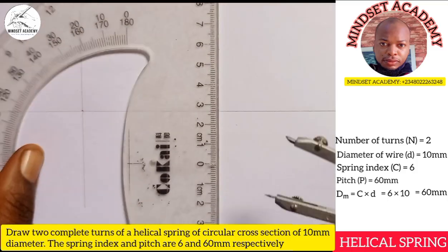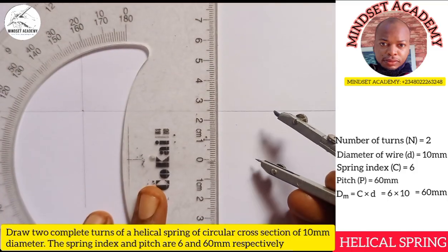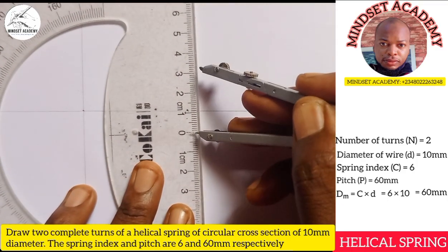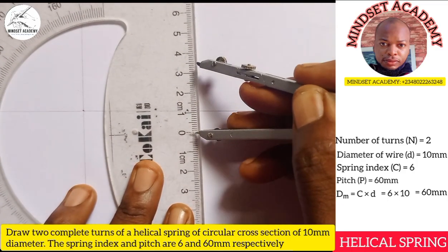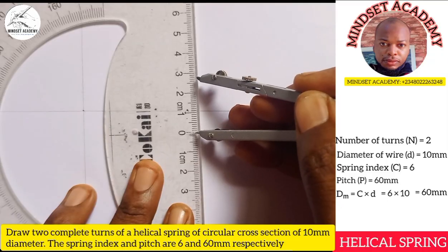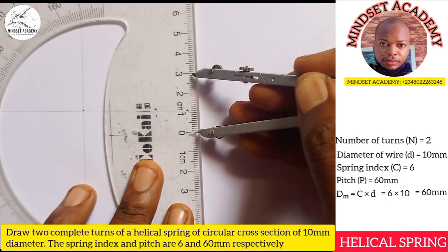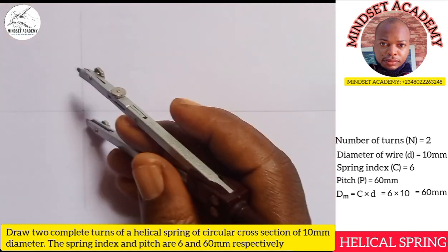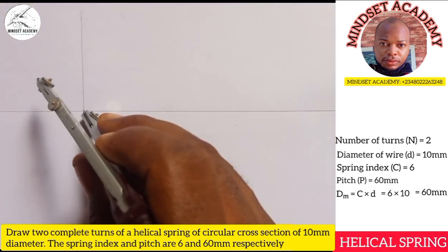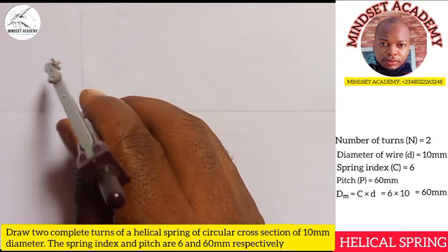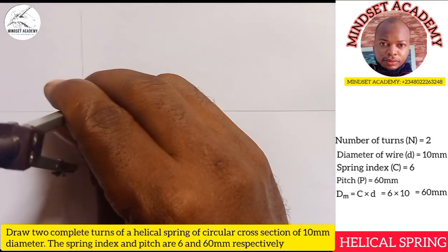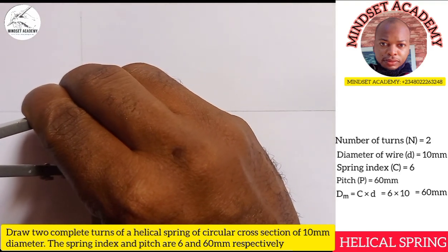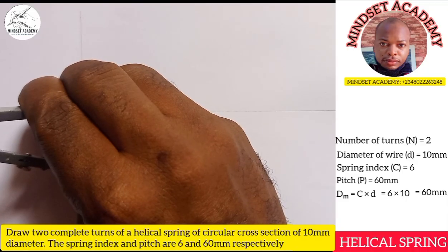I'll take my metal rule and measure from zero — half of 60 is 30. I'll draw the mean diameter using a dotted line in this manner.